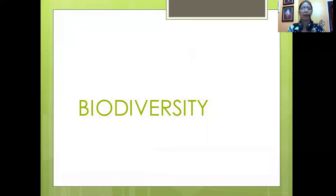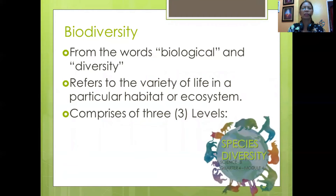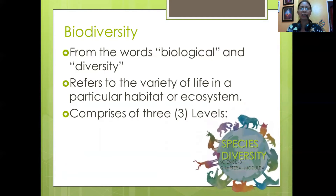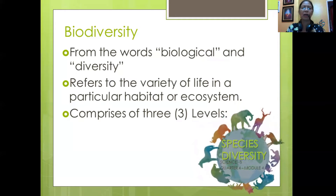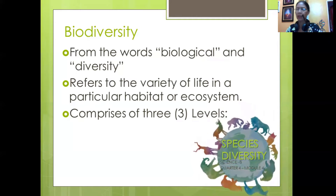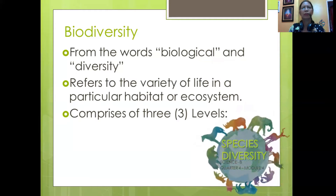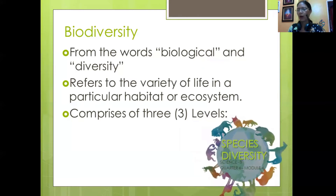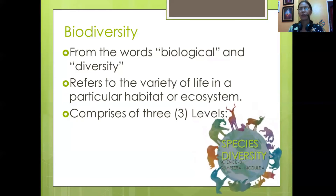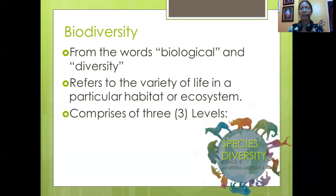Next, biodiversity — from the words 'biological' and 'diversity' — refers to the variety of life in a particular habitat or ecosystem. There is an interaction of living and non-living things. For example, in a farmland, there is a farmer and lots of organisms such as the carabao, cows, reptiles, piglets, pigs, horses, insects, etc., living in a farmland. We call it a farmland or rice-field ecosystem, wherein the variety of life in a particular habitat has an interaction.